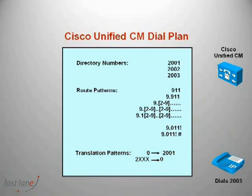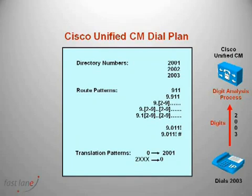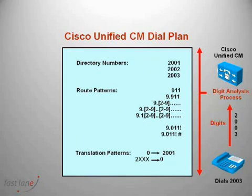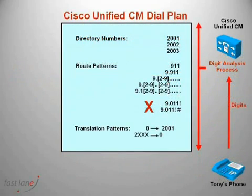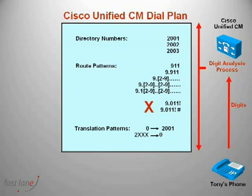Here we have an IP phone that dials 2003. The digits that it dials are sent to the digit analysis process on Communications Manager. The digit analysis process then searches through the dial plan to find the best match for the number that you dialed. In this case, it matches directory number 2003, which then causes a call setup to be initiated to the telephone that has extension 2003 on it. In this example, we want to restrict Tony's IP phone from making international calls. However, in this case, we're not able to do that because Tony's IP phone has full access to the dial plan, including the two route patterns that he needs to make international calls.